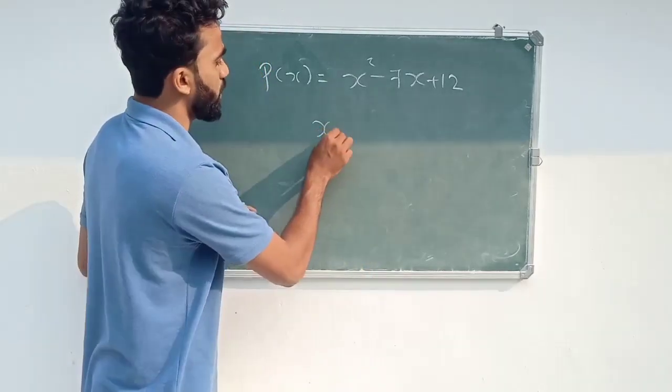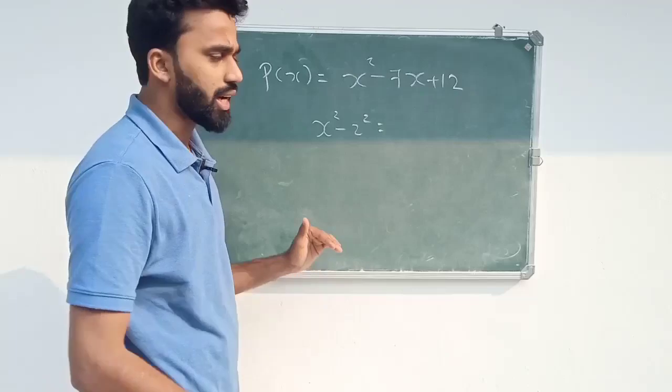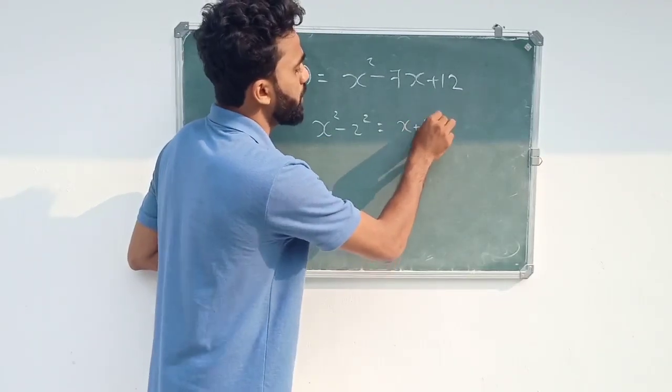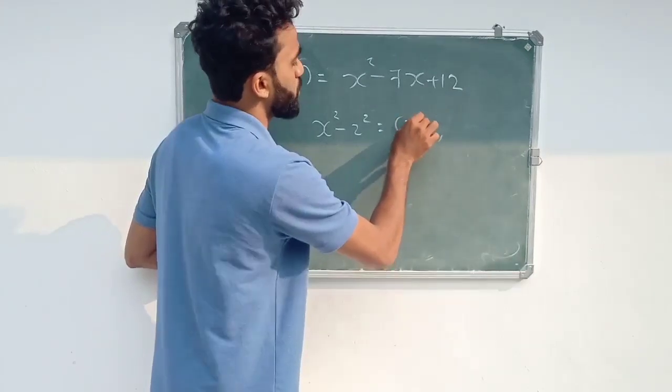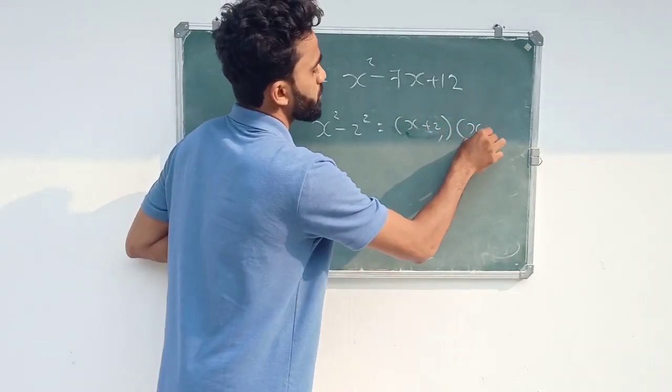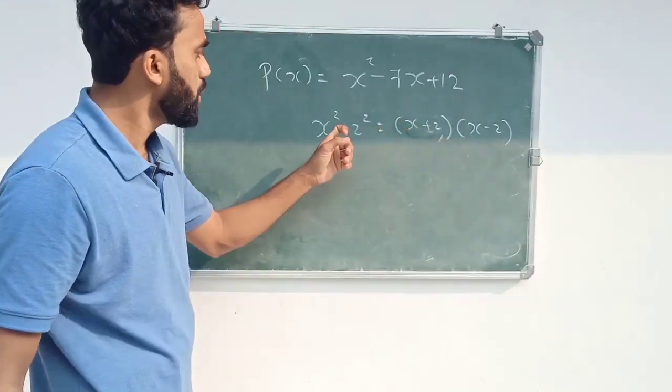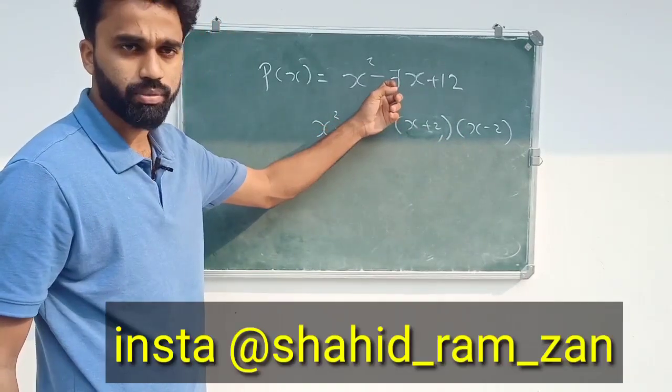We discussed that x square minus 2 square. x² minus b² is x plus b into x minus b. This model is very useful. We can do a little bit.